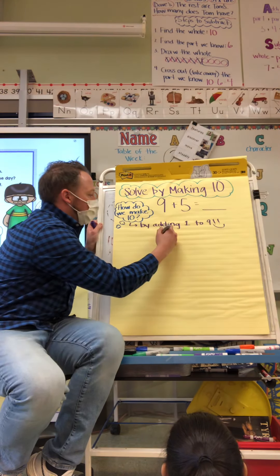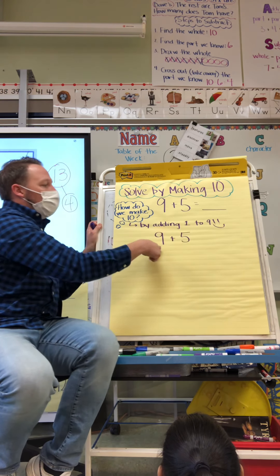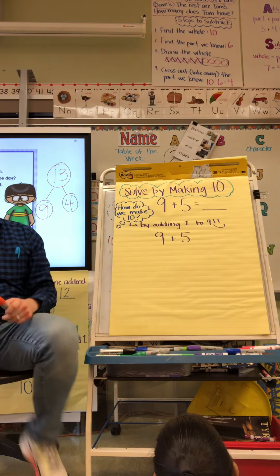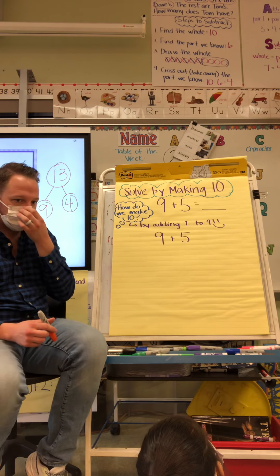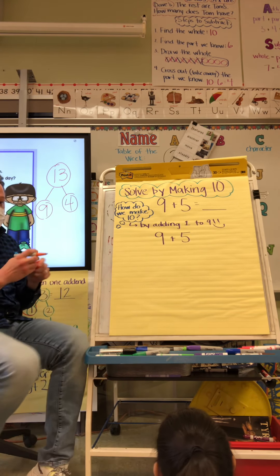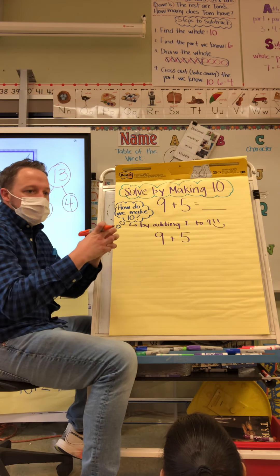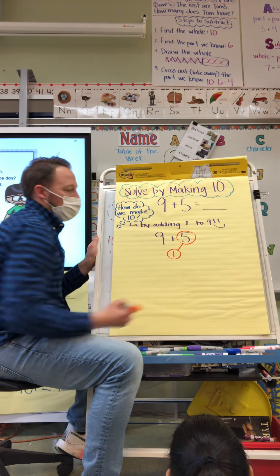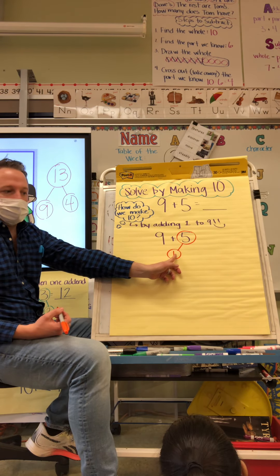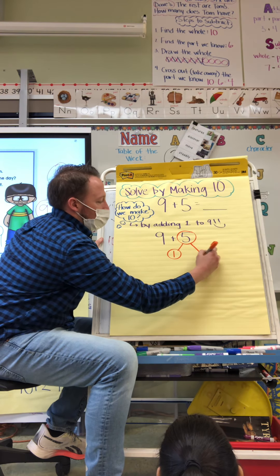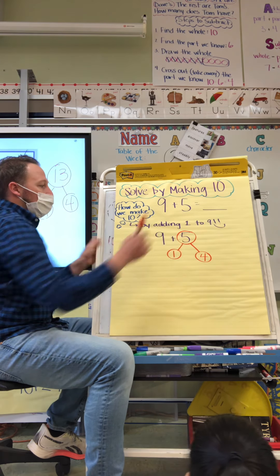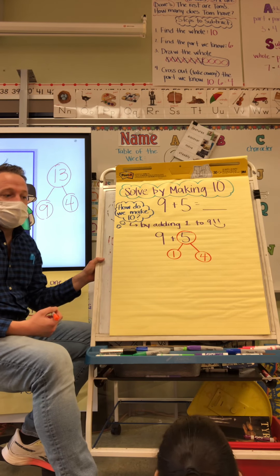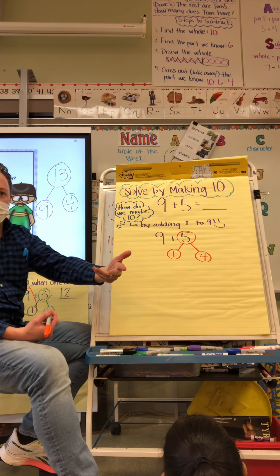Now if I have nine plus five, how do I get a one to add to nine? Where am I going to get a one to add to my nine? I have to look at the five. We're going to use the word 'break' — I have to break the five into one and then what number? If I'm making five, what goes with one? It goes with four, because one and four make five.